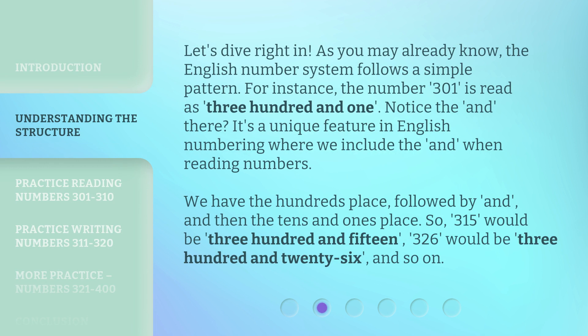Let's dive right in. As you may already know, the English number system follows a simple pattern. For instance, the number 301 is read as three hundred and one. Notice the 'and' there? It's a unique feature in English numbering where we include the 'and' when reading numbers. We have the hundreds place, followed by 'and', and then the tens and ones place. So, 315 would be three hundred and fifteen, 326 would be three hundred and twenty-six, and so on.